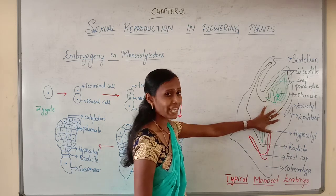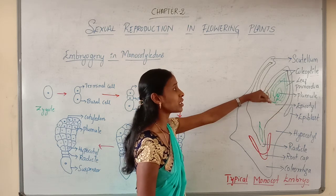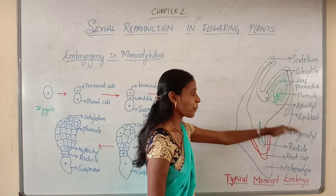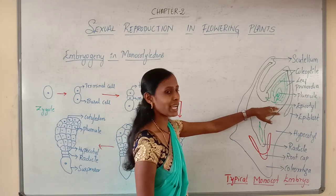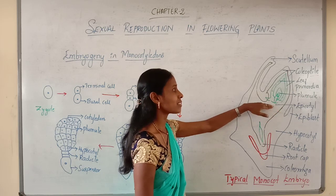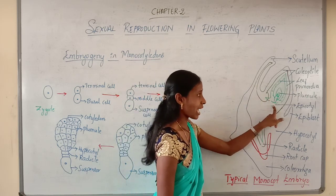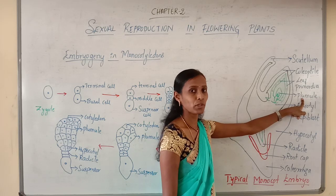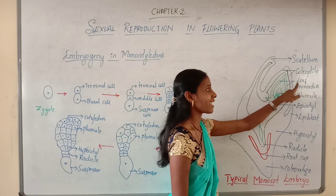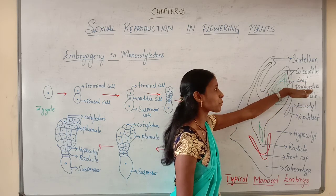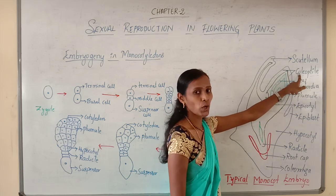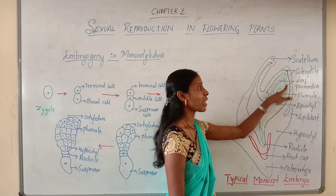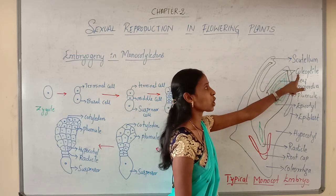The portion of the embryonal axis near the attachment of the scutellum is called the epicotyl — the part above the level of the cotyledon. The epicotyl comprises the shoot apex or stem tip called the plumule. Along with the plumule, it also contains certain leaf primordia. Both the plumule and leaf primordia are covered by a sheath called the coleoptile, while the radicle and root cap are covered by the coleorhiza.